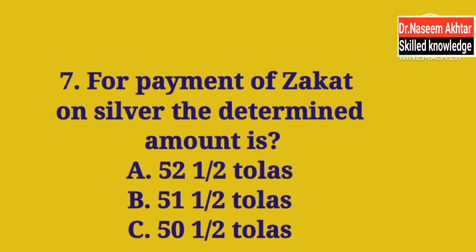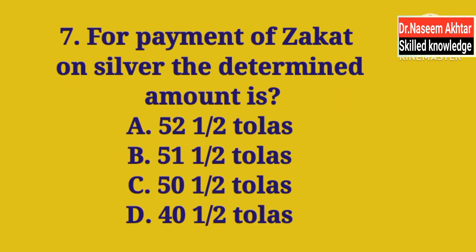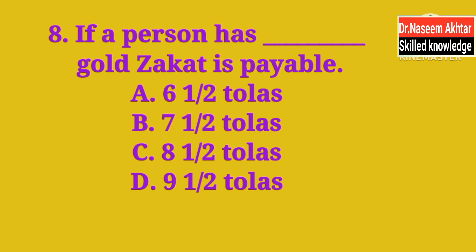MCQ 7: For payment of Zakat on earned silver, the determined amount (nisab) is — A. 52.5 tolas, B. 51.5 tolas, C. 50.5 tolas, D. 40.5 tolas. چاندی پر Zakat کی payment کتنی ہے؟ The correct answer is A — 52.5 tolas. چاندی پر Zakat فرض ہے ساڑھے باون طولے پر۔